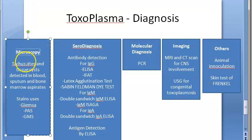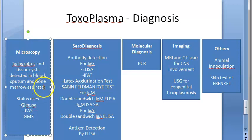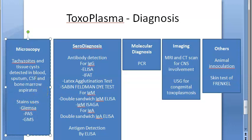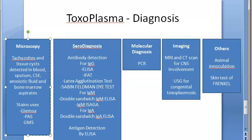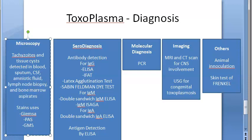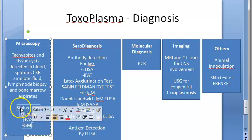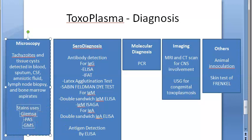In microscopy, what will you find? The tachyzoites and tissue cysts. Where will you detect them? In blood, sputum, bone marrow aspirate, cerebrospinal fluid (because it affects the brain), amniotic fluid, and biopsy from lymph node. The stains used are Giemsa stain, PAS stain, and GMS stain. In us you will see only tachyzoites and tissue cysts — not oocysts, which are only in cats.